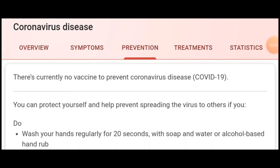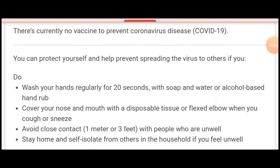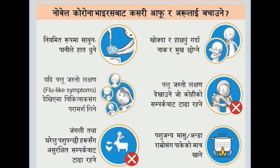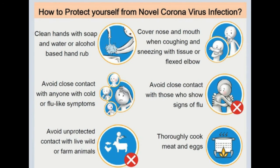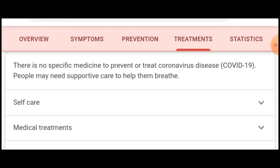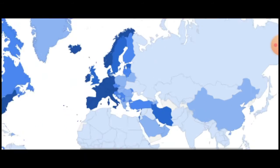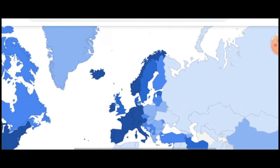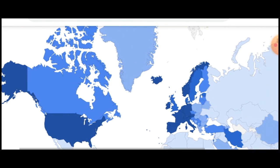Here are some prevention and measures for COVID-19. There are some steps you can follow at home. Let's talk about the treatments. There is no specific medicine to prevent or treat coronavirus COVID-19. There are many prevention measures. The first sign of an issue is that this virus has spread all over the world.